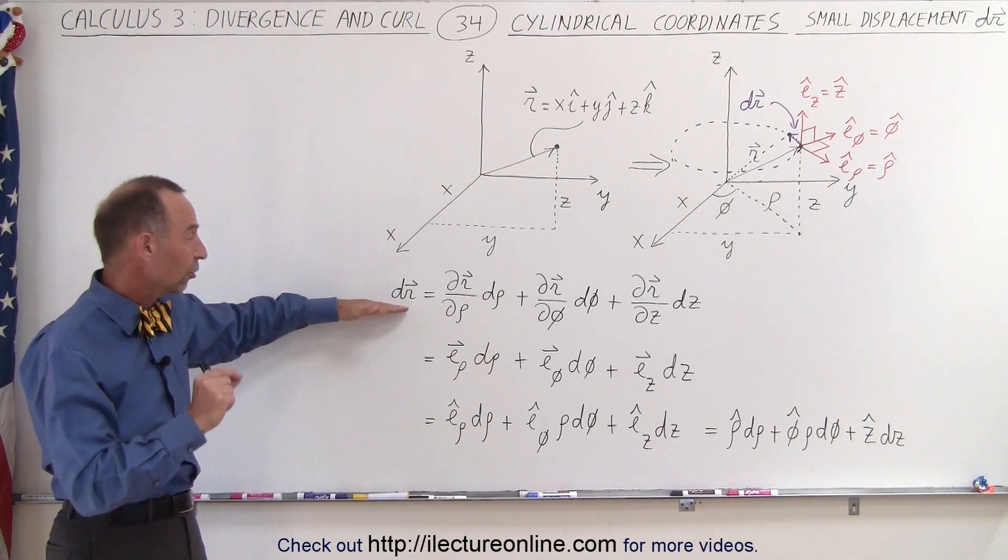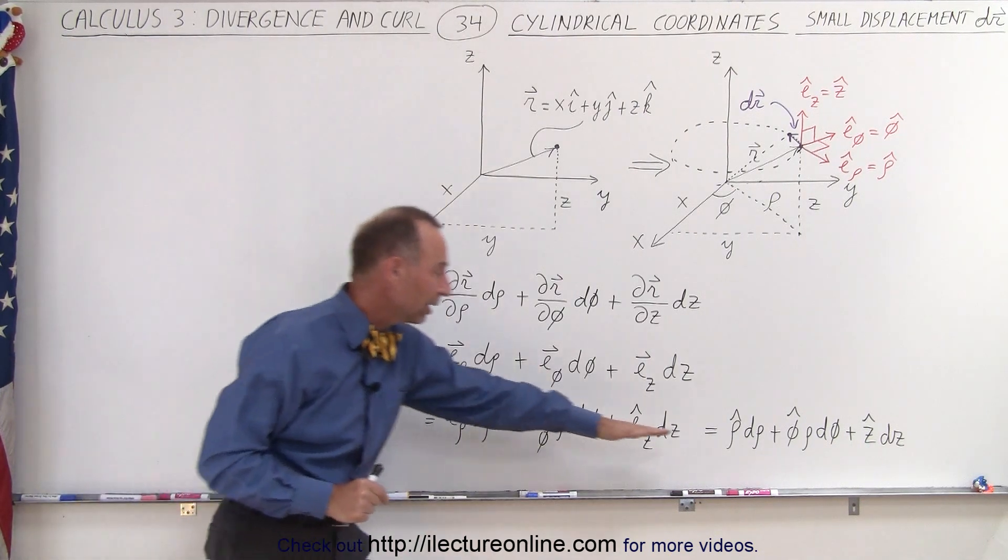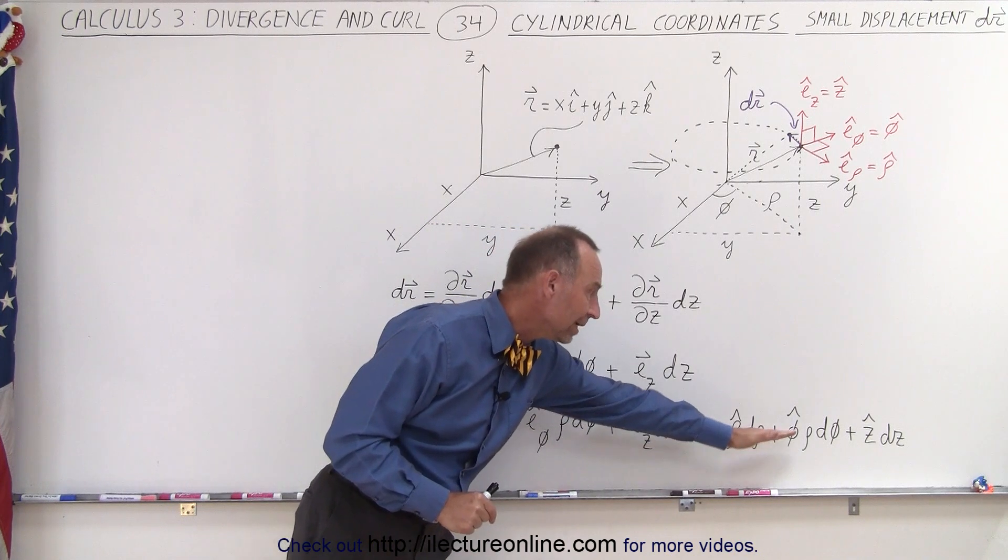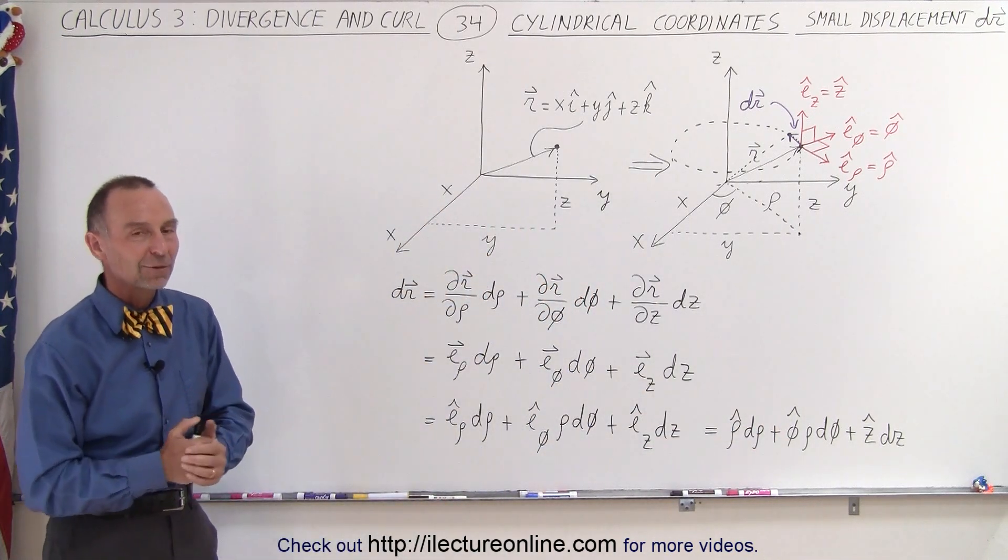So there you go, that is now how we can express a small change in the position vector in terms of rho, phi, and z unit vectors, and that's how it's done.